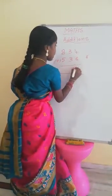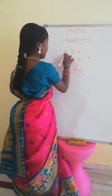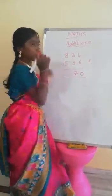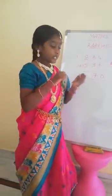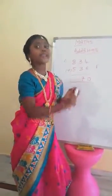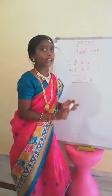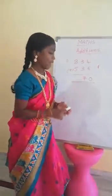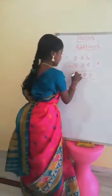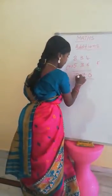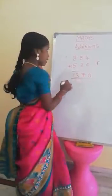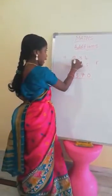After, take 8 plus 5: starting from 8, count — 9, 10, 11, 12, 13. The answer of 8 plus 5 is 13.